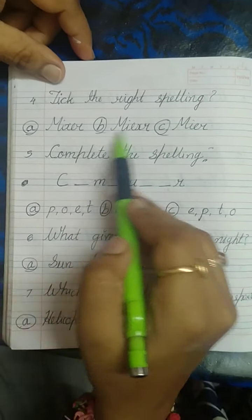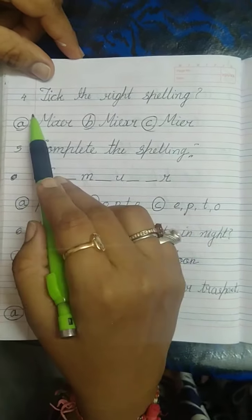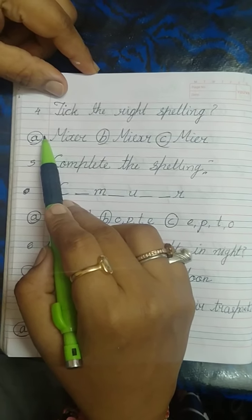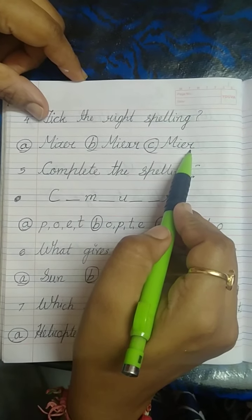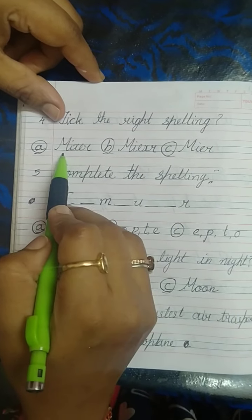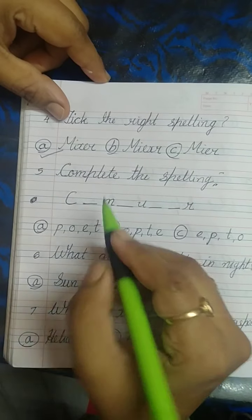Tick the right spelling. You have to identify the spelling and then tick. This is the spelling of mixer. What is the right spelling of mixer? M-I-X-E-R. This is M-I-E-R, so this is wrong. M-I-E-X-E-R, this is also wrong. M-I-X-E-R, so tick this right spelling.